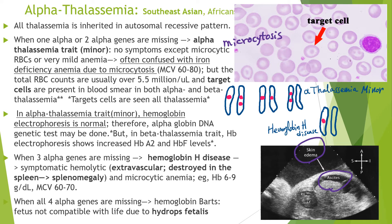Thalassemia develops when alpha or beta globin genes are defective. All thalassemia — alpha and beta — is inherited in an autosomal recessive pattern.